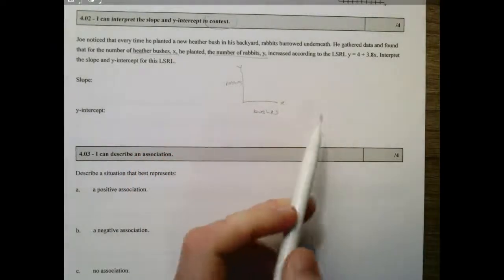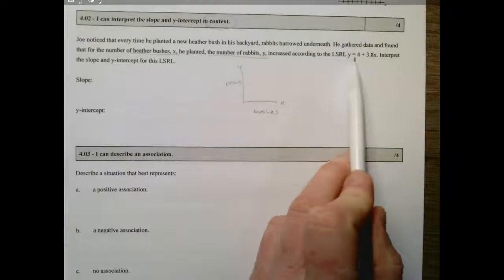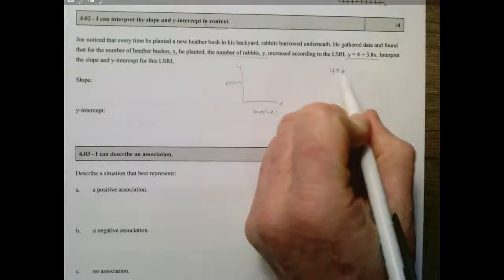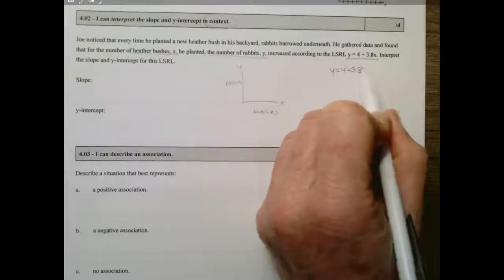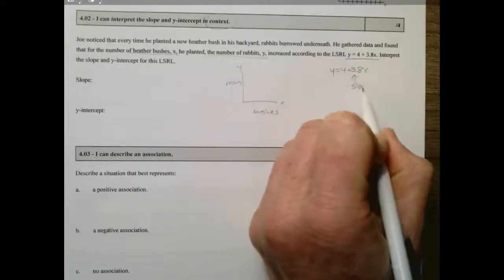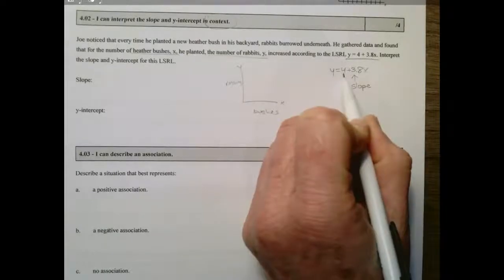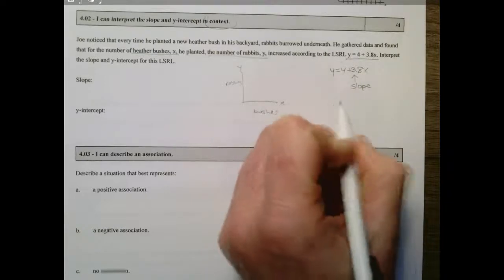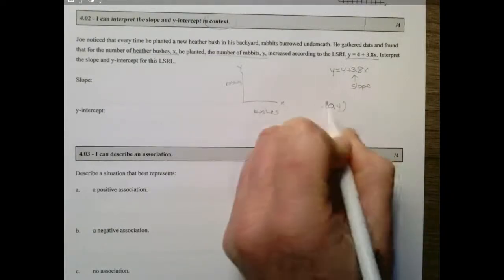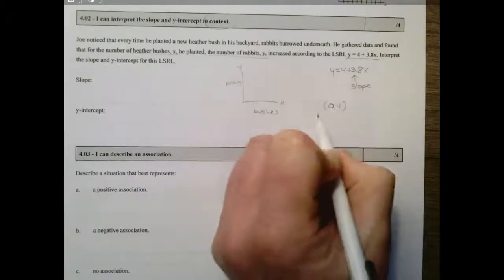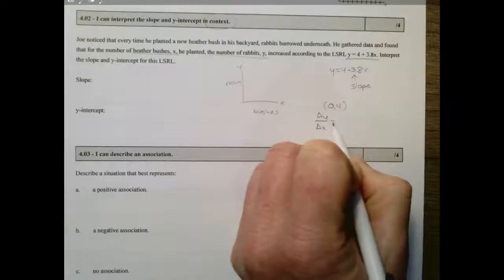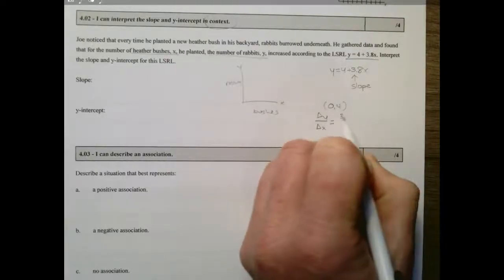increased according to this least squares regression line: y equals 4 plus 3.8x. This is my slope, this is my y-intercept. So that means we've got (0, 4) as a point, and my slope, my change in y over my change in x, is 3.8 over 1.